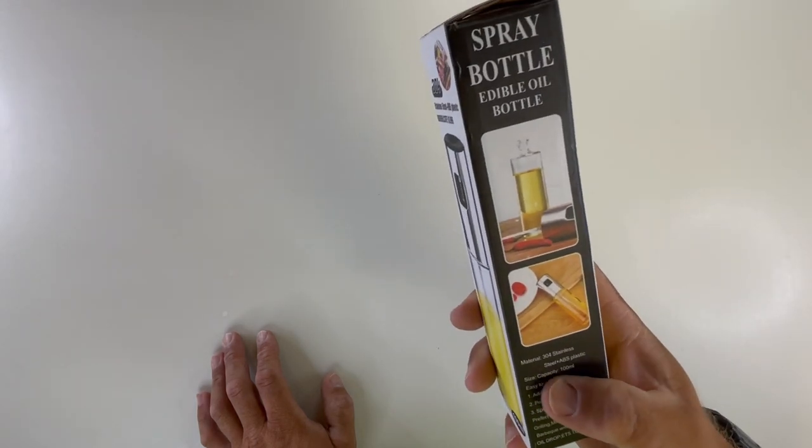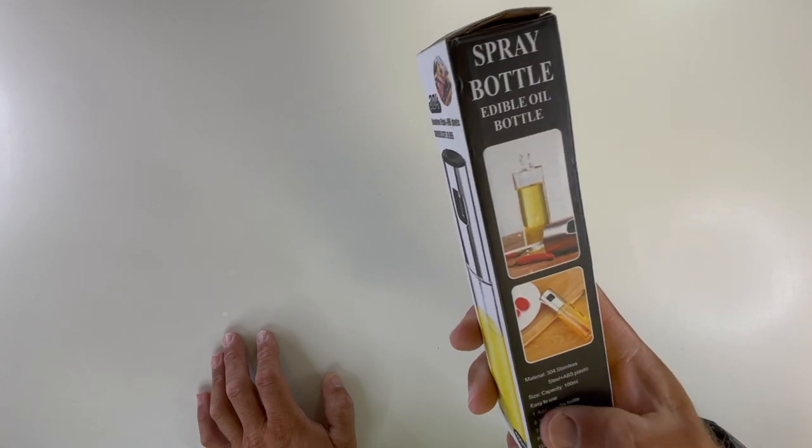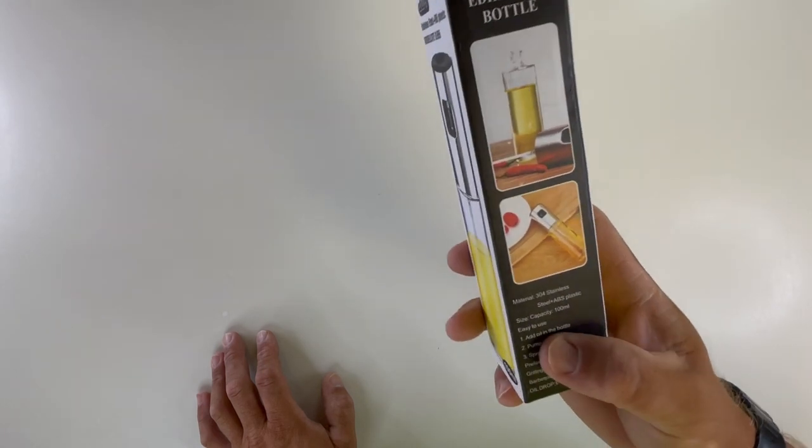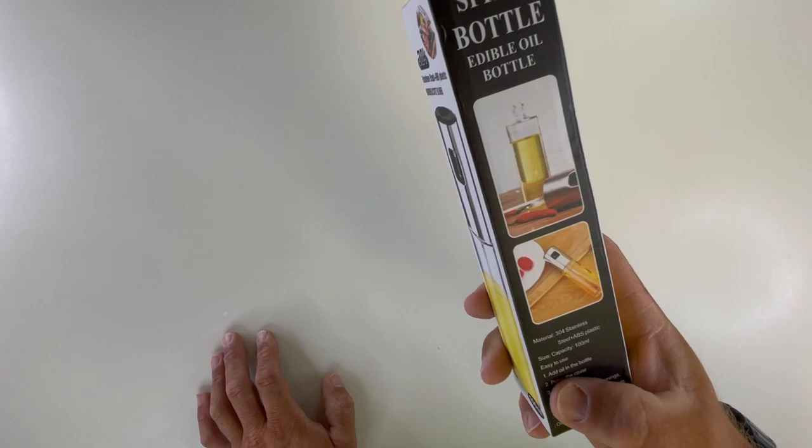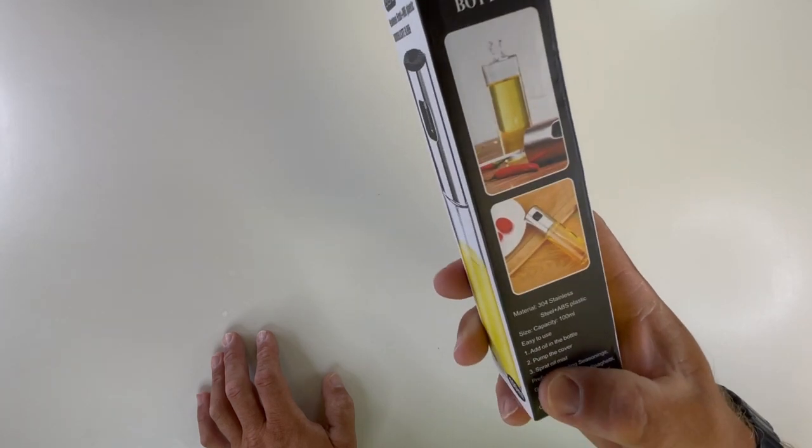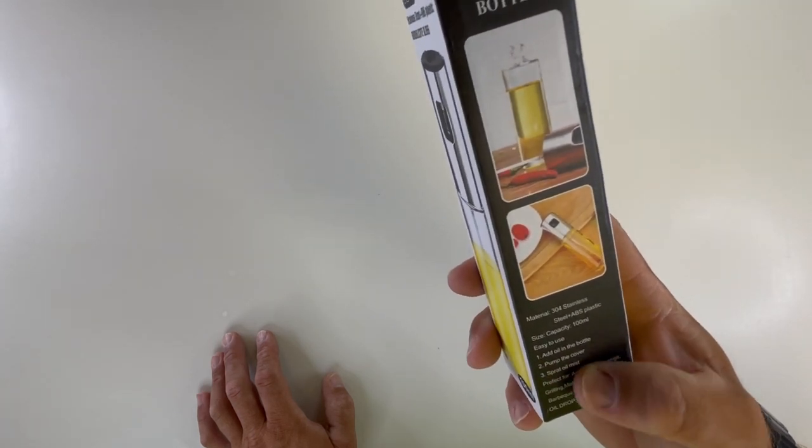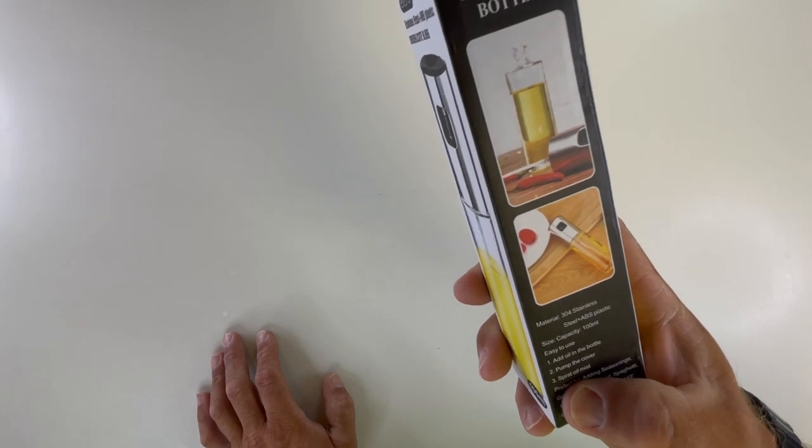Material: 304 stainless steel plus ABS plastic. Size 100 milliliters. Easy to use. One: Add oil in the bottle. Two: Pump the cover. Three: Spray oil mist.